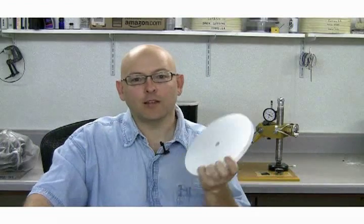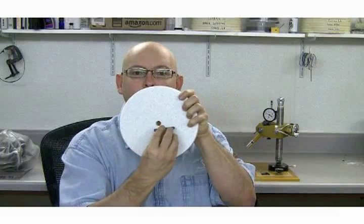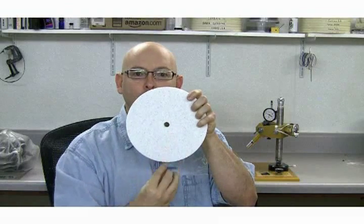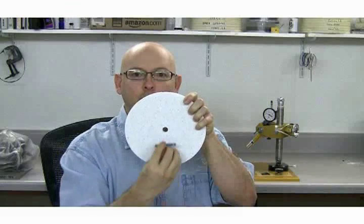Some people like to score their lap in radial lines, dragging the tool straight out from the spindle nut on a stationary lap like this.